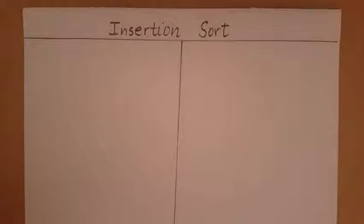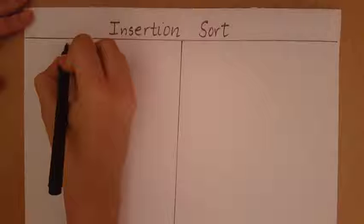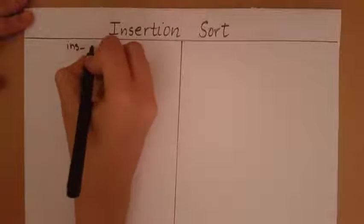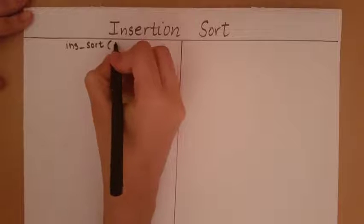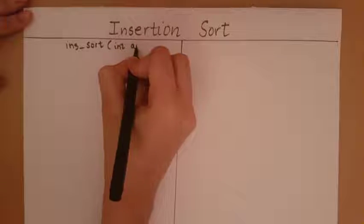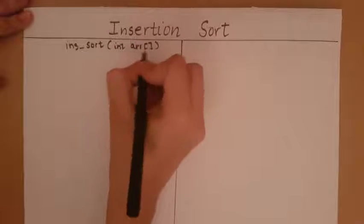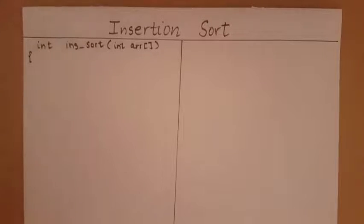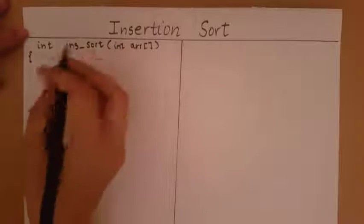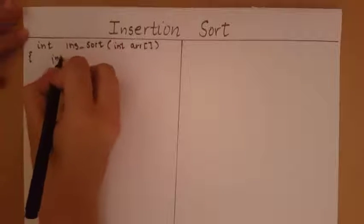In this video, we will take a look at how to write the program for insertion sort. Let's start by defining the function. It's going to take in an array — for this example, I'm considering it to be an integer array. I'm going to return the sorted array. The number of elements in the array arr is going to be stored in a variable called n.